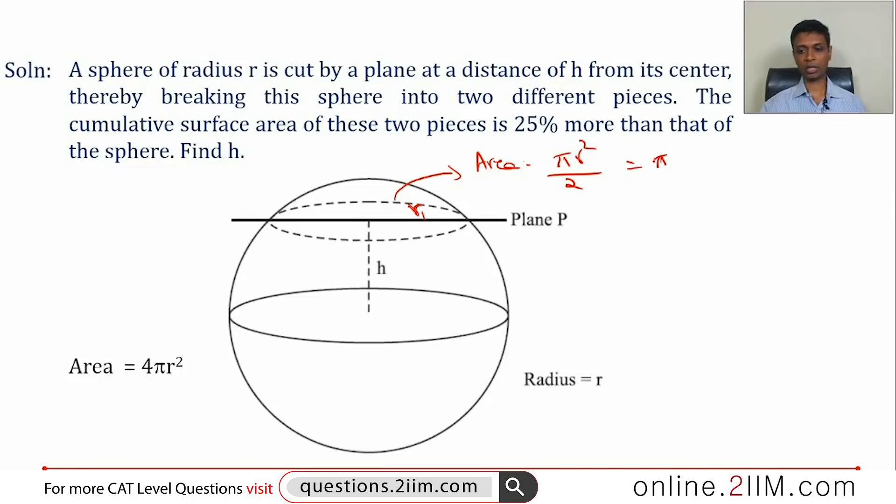Which is nothing but πr₁². This radius squared into π will be the area, which is πr² by 2. Or knock off π: r₁ equals r by √2. r₁² is r² by 2, or r₁ is r by √2. We found the radius of that circle that would have been created. We still need to find h.